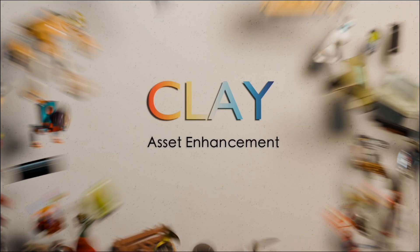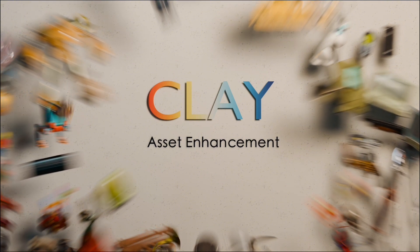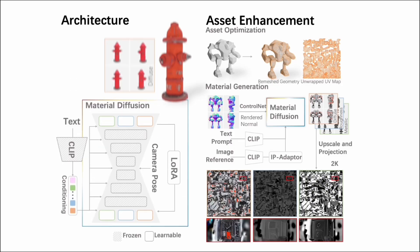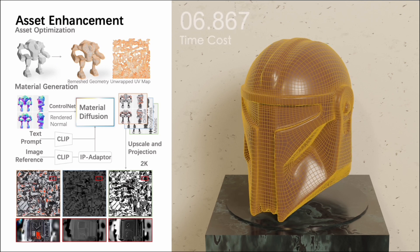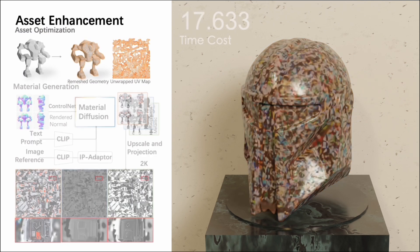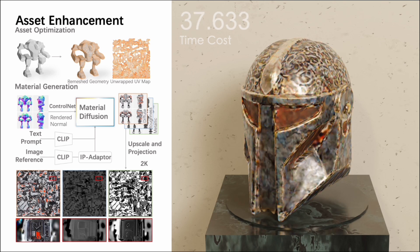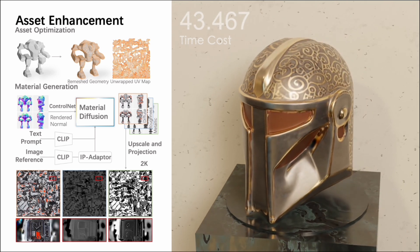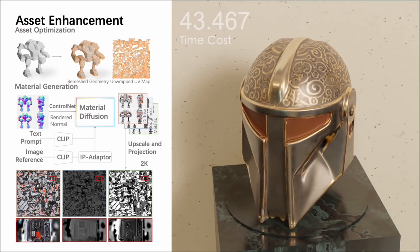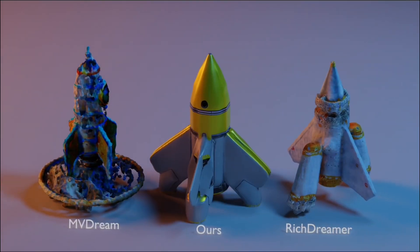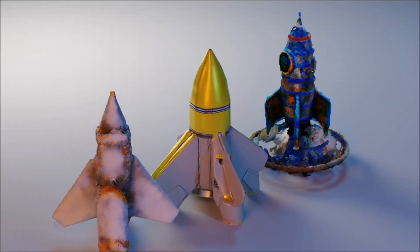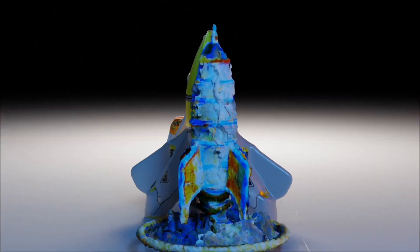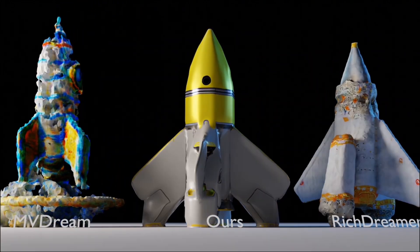We also introduce a multi-view material diffusion approach, trained on datasets with PBR textures. After generating the geometry, we process it into quad faces, then utilize a material diffusion model with advanced back-projection techniques to achieve rapid and efficient creation of high-quality textures. Our method showcases superior relighting effects with accurate specular highlights. For more details, please refer to our paper.